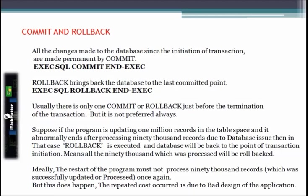First, let's understand what is commit and rollback. All the changes made to the database since the initiation of a transaction are made permanent by executing the commit command, and this is how we run the commit command in a COBOL DB2 program. Rollback brings back the database to the last committed point, and this is how we achieve the rollback command.